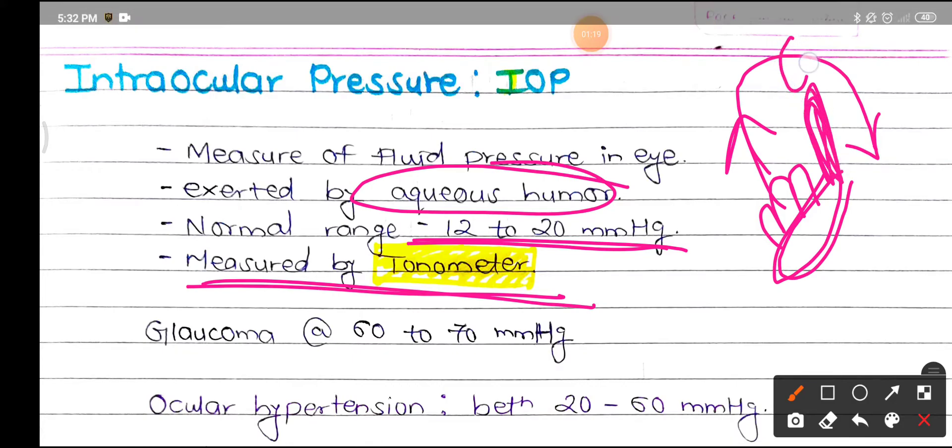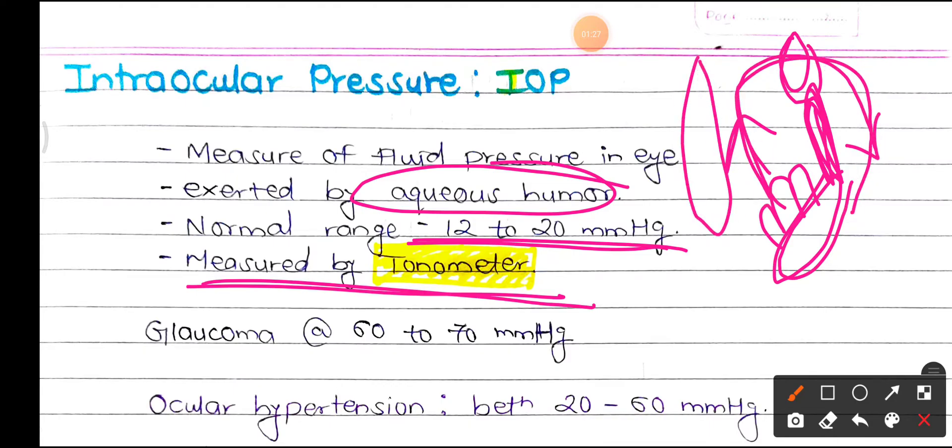So it goes from the posterior chamber to the anterior chamber in front of the lens, and then goes into the canal system for its drainage.